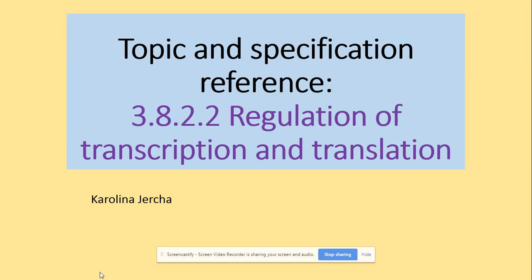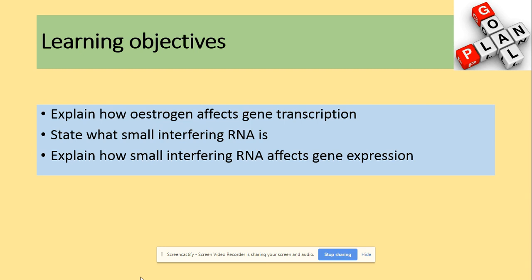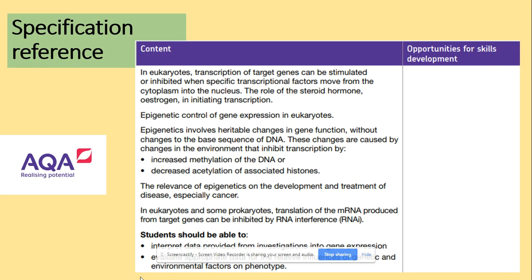Welcome to regulation of transcription and translation. You need to be able to explain how estrogen affects gene transcription, state what a small interfering RNA is, and explain how it affects gene expression. In terms of the specification, we are looking at the eukaryotic cell, estrogen, and interfering RNA.